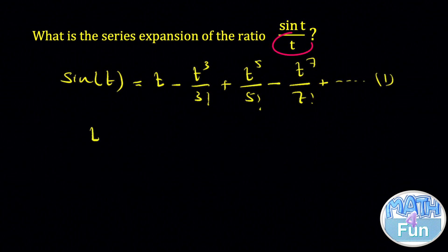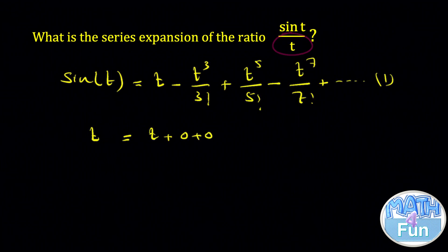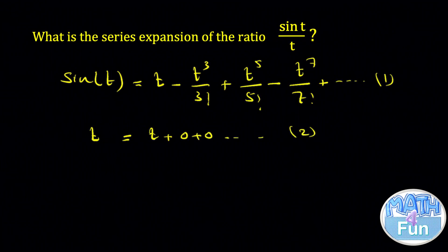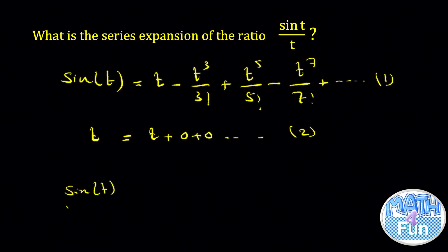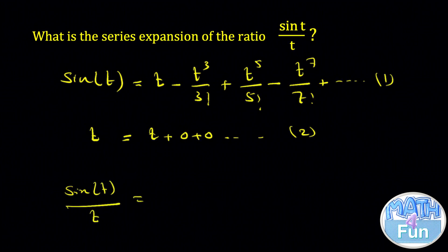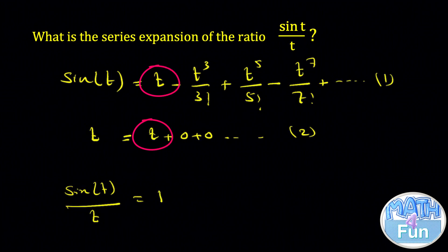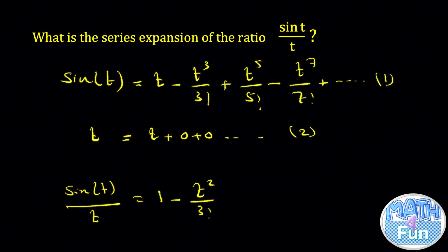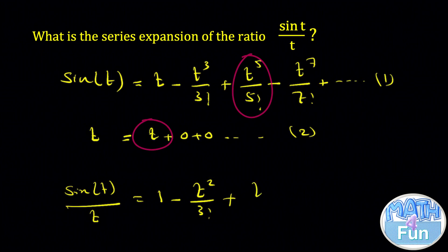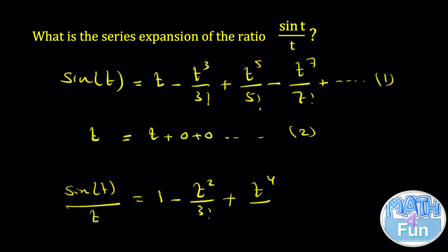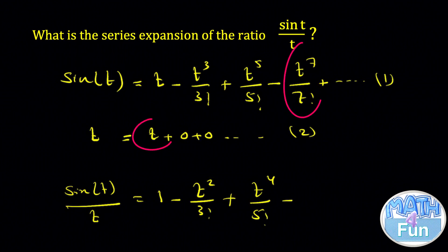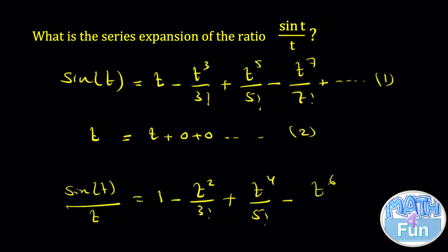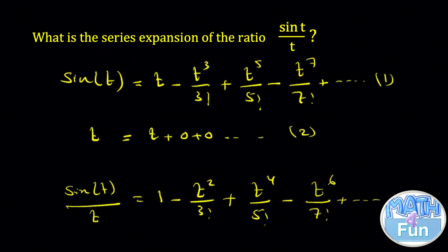Let's call this equation 1. Now, what about t? We can write t as t plus 0 plus 0 and so on — let's call this equation 2. Dividing equation 1 by equation 2 to get sine t over t, we divide by t, so t over t equals 1, minus t cubed over 3 factorial divided by t equals minus t squared over 3 factorial, plus t to the power 5 over 5 factorial divided by t equals t to the power 4 over 5 factorial, minus t to the power 7 over 7 factorial divided by t equals t to the power 6 over 7 factorial, plus and so on.